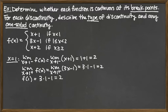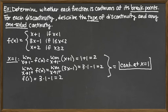For the function value, the middle piece's interval includes 1 (with 'less than or equal to'), so we plug x equals 1 into the middle piece: 3 times 1 minus 1 equals 2. All three values are equal, which tells us the function is continuous at x equals 1. That's one breakpoint resolved.